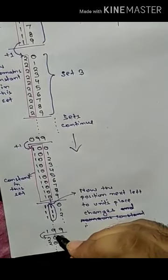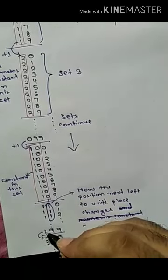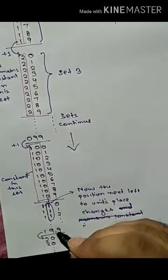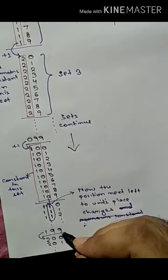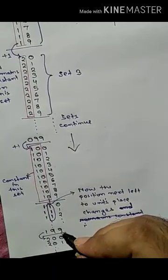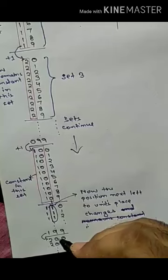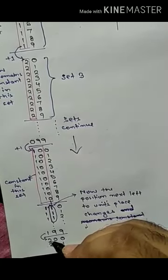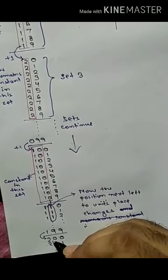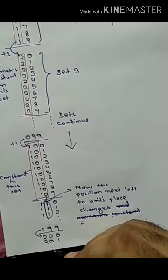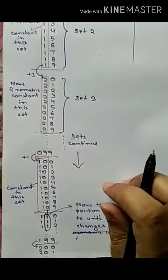The tens place remains constant until it reaches 9. When both the units and tens place have reached 9 — the last digit — both restart from 0, and the hundreds place increments by 1, becoming 2. This process continues similarly, and the same logic applies when we move to the binary system.